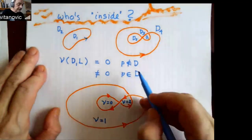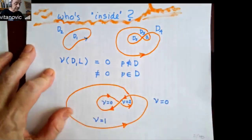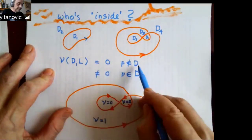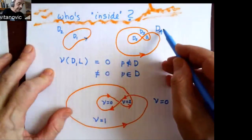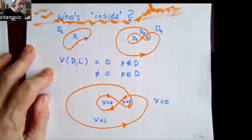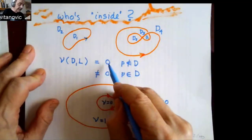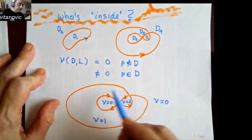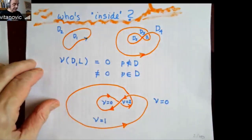The first observation is that if you're on the outside — so you're not in the domain, you're sitting out there — you'll have winding number zero. But if you're inside the domain, you can have winding numbers which are not zero.